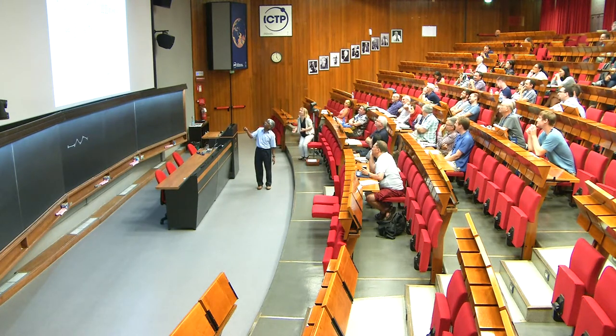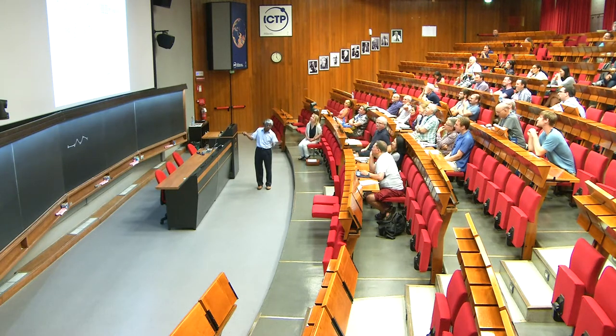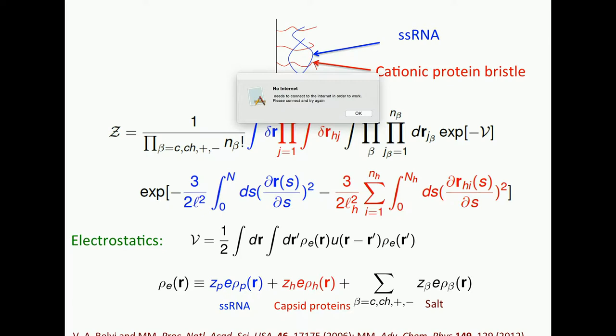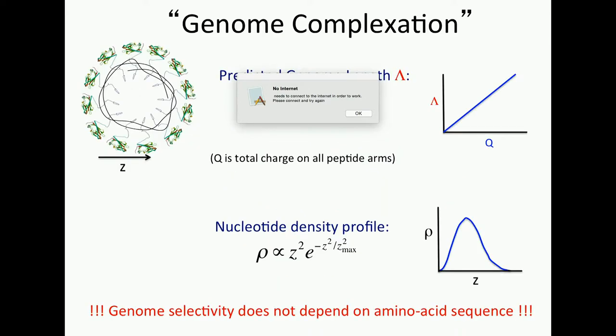The blue is RNA. It has all the conformations of this RNA. The bristles are the protein tails, and the hydrophobic domain is somewhere there. The red color corresponds to all the conformations of these protein tails. And then everything else, the electrostatics. There is interaction between blue and blue, between red and red, interaction between blue and red, and there is lots of salt in here.